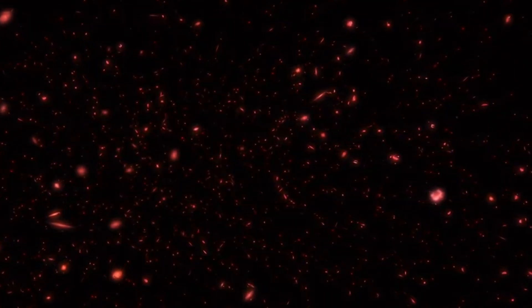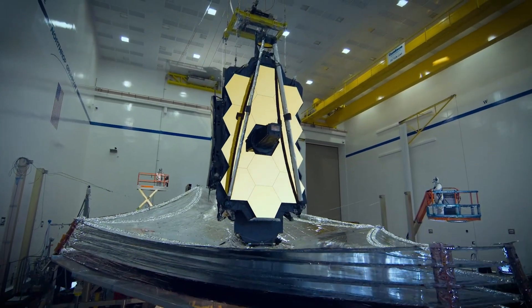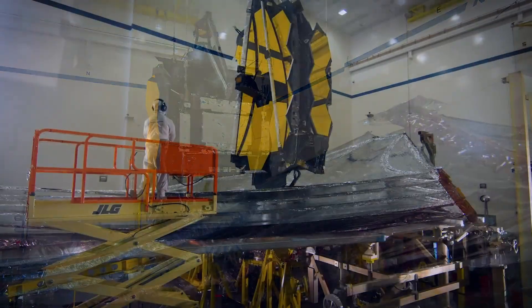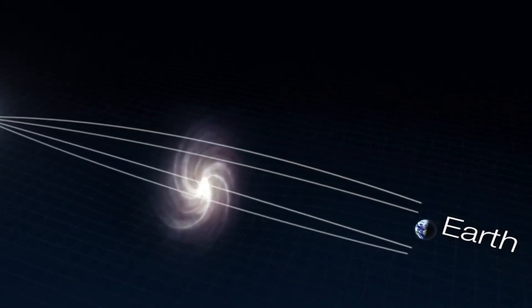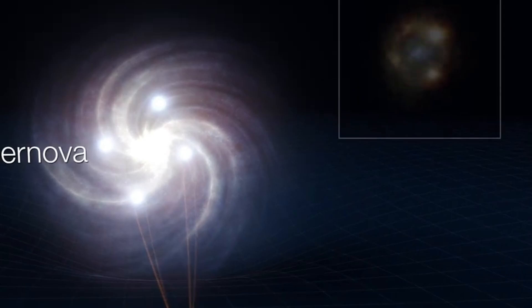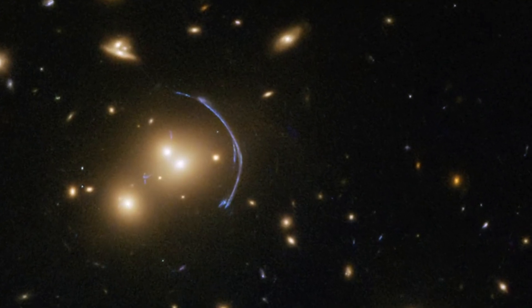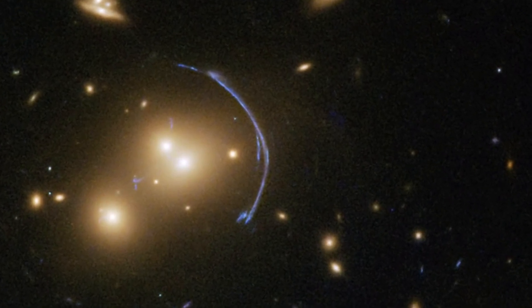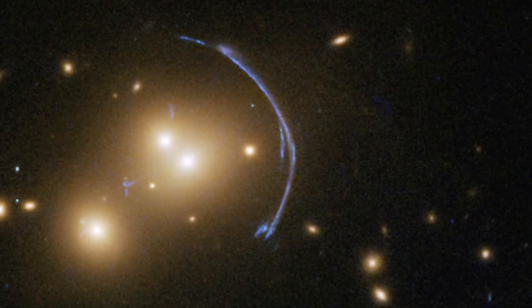The star is discovered by Webb's NIRCam instrument to be a massive B-type star that is around a million times as bright and more than twice as hot as our Sun. Earendel is part of the Sunrise Arc galaxy. This far-off star is now visible to scientists thanks to gravitational lensing, because of Earendel's fortunate alignment behind a wrinkling in space-time caused by a huge galaxy cluster. Both Hubble and Webb were able to identify it.